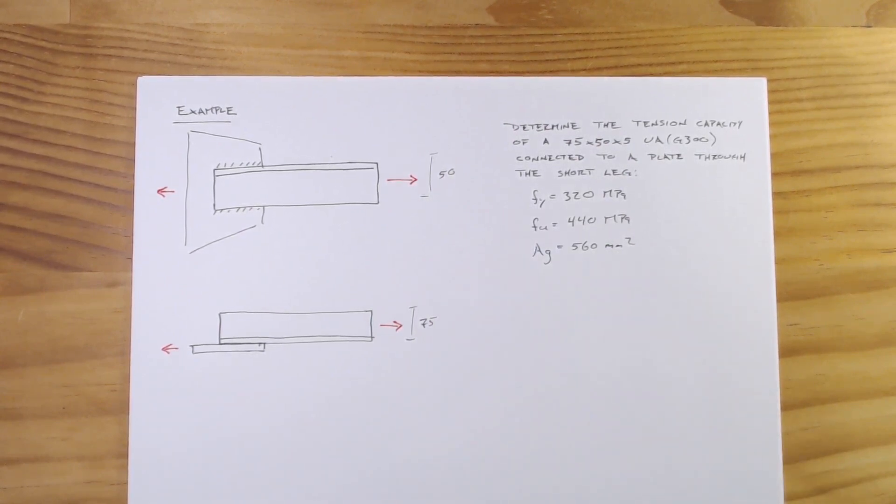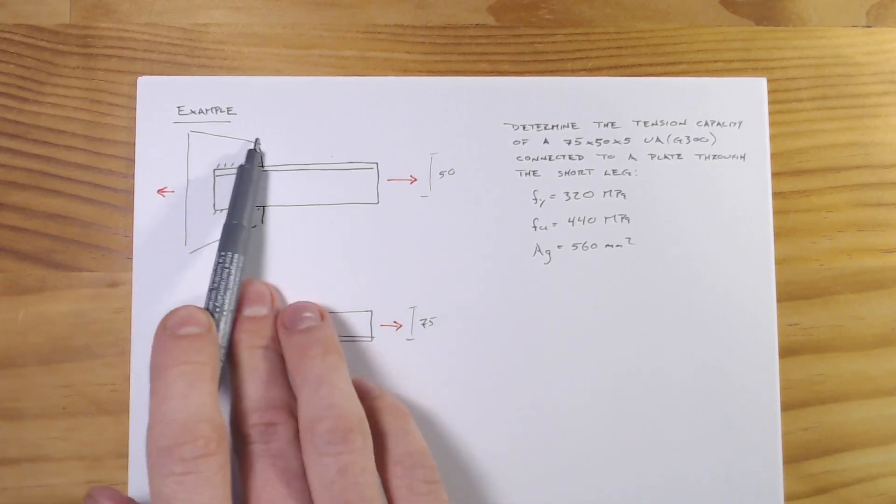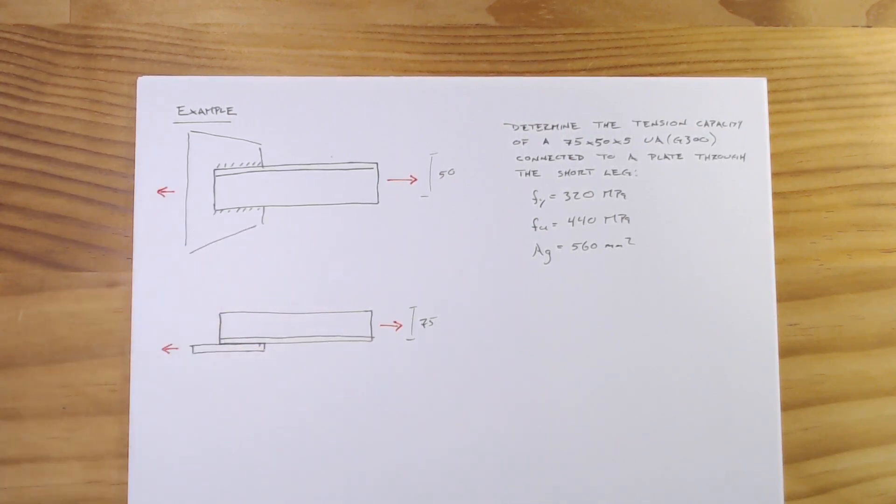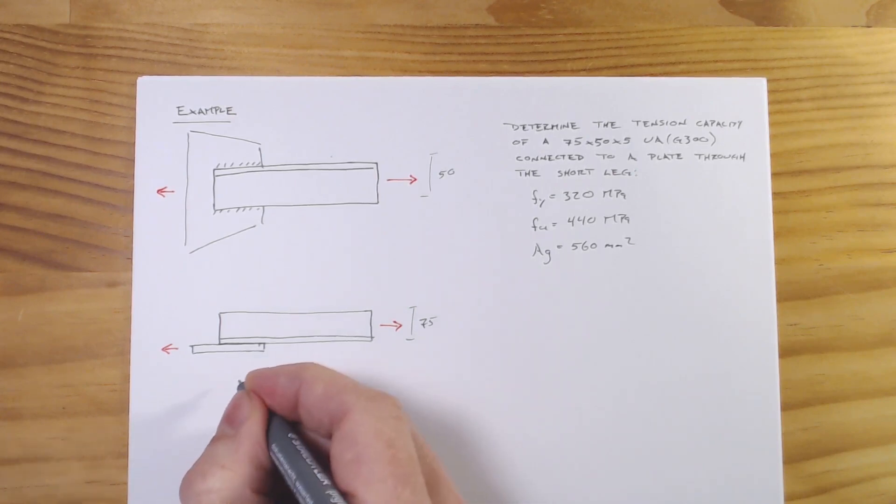I've given you some material properties so it's got a yield stress of 320 megapascals, it has an ultimate stress of 440, and it has a gross area of 560 millimeters squared. I've got it welded to this plate here, that's what this hatch is denoting. So let's just go through and look at what the section capacity is.